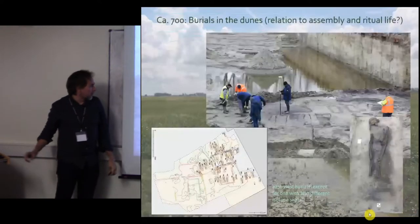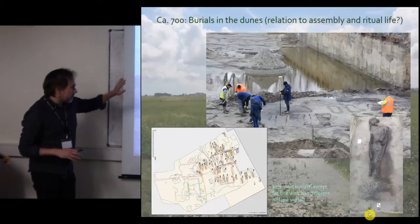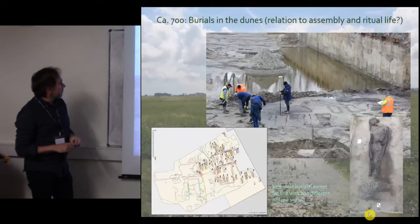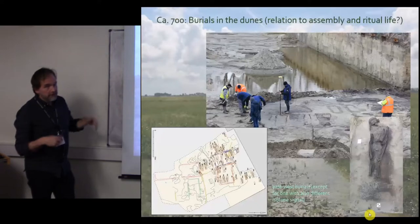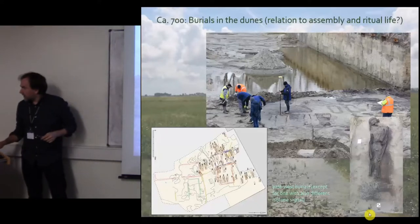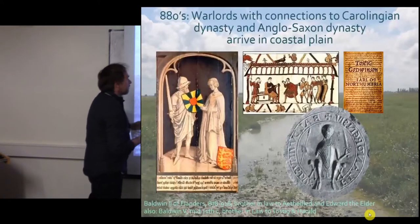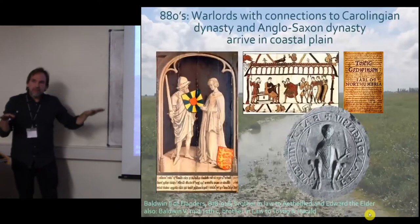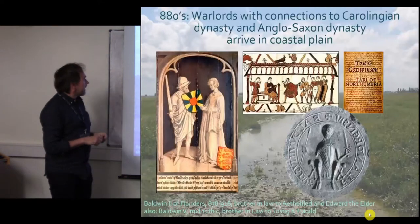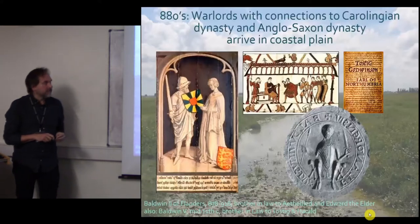We know where they were buried — in the dune belt. These are very recent excavations: one of the cemeteries of this population was not buried in the salt marshes but in the sand of the dunes. So it was a very peaceful society in equilibrium, but then things change at the end of the 9th century with the arrival of the warlord: the Count of Flanders.